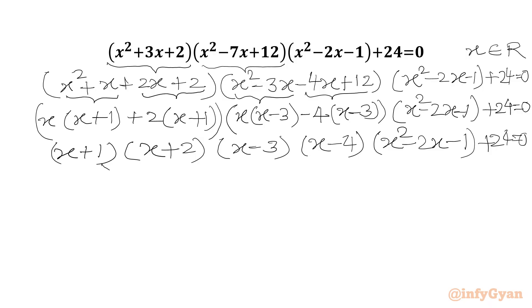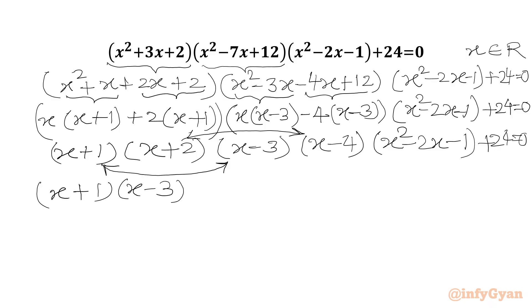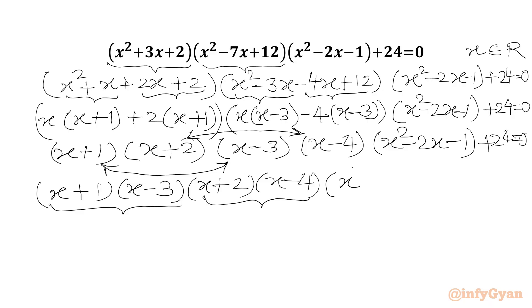Now we are going to multiply these pairs of brackets strategically: (x+1)(x-2) and (x+2)(x-3)... actually we pair (x+1)(x-3) giving x²-2x-3, and (x+2)(x-4) giving x²-2x-8. Then we have (x²-2x-1) + 24 = 0.